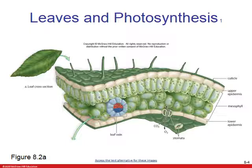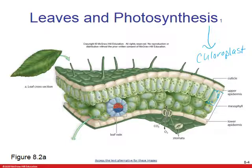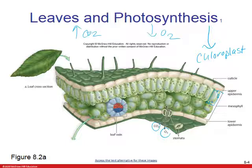Let's look at a leaf structure before we move into the process of photosynthesis. There are different layers, but basically we're looking at a plant cell and these green little spots are chloroplasts. Chloroplasts are the organelles in which photosynthesis takes place. We also have to exchange carbon dioxide and oxygen — plants use carbon dioxide and release oxygen during photosynthesis. The openings called stomata are how the plant releases these gases.